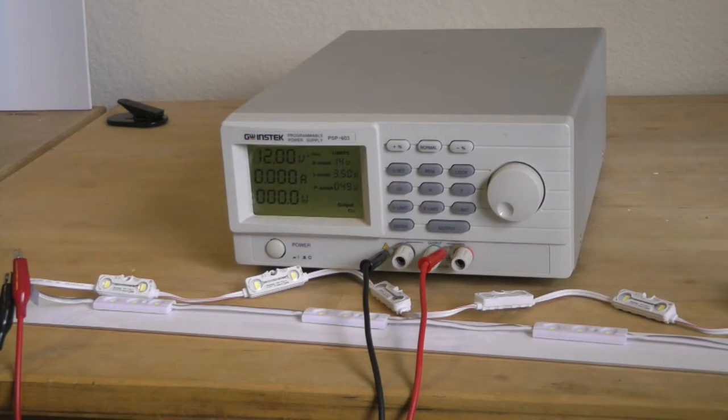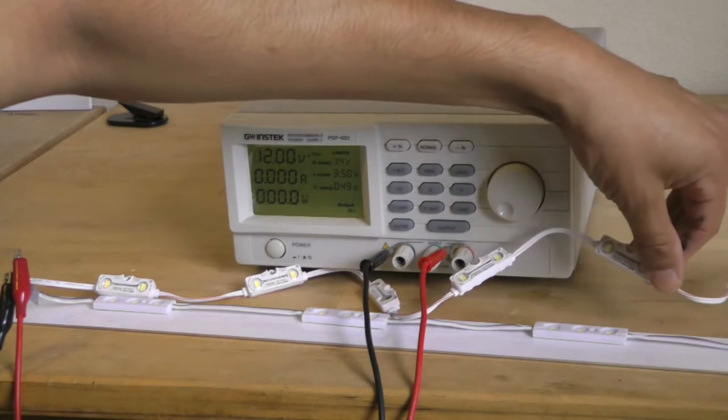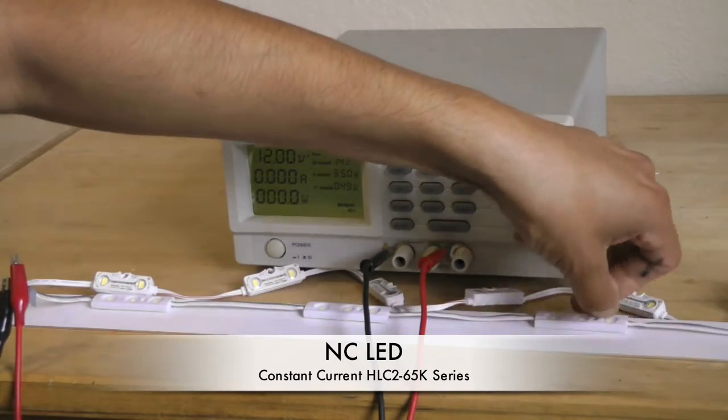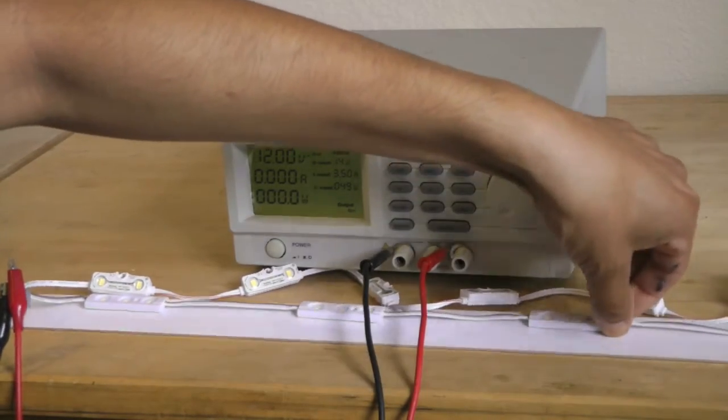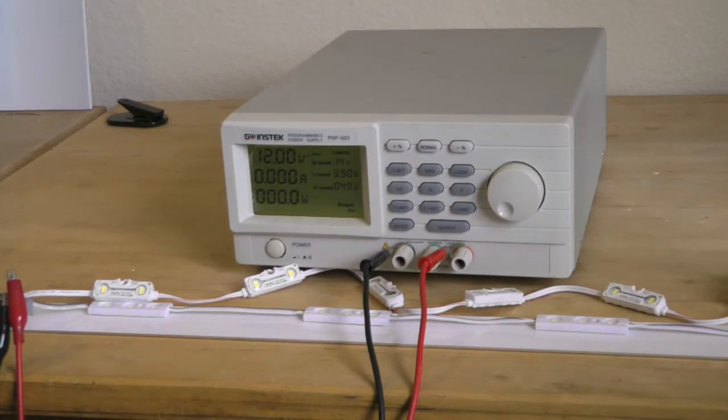Okay, so what I've done here is I'm going to hook up two different lines of LEDs to this power supply. These are our superior and awesome NC LEDs and these are constant current. This is JSLED. They're a constant voltage.